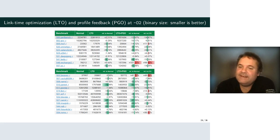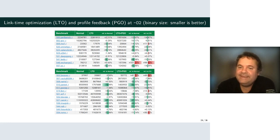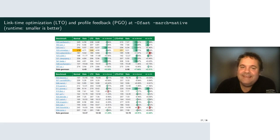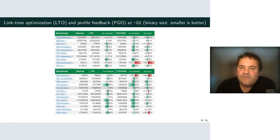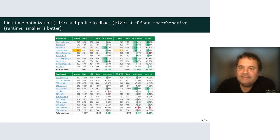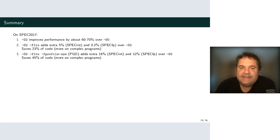Looking at code size with LTO: GCC LTO is a very good size optimization. It generally saves enough code size so that O3 with LTO is about the same size as O2 without LTO. This is different from Clang, where LTO pushes decisions into per-unit parallel optimizers, and code size goes up with Clang LTO.